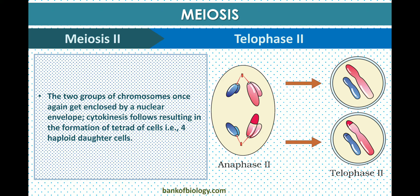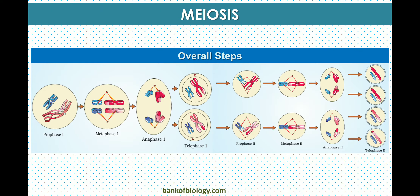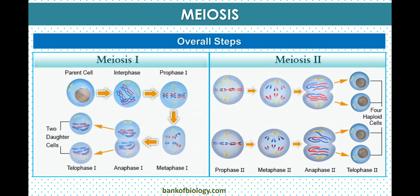In telophase two, the two groups of chromosomes become enclosed by the nuclear envelope. Cytokinesis follows, resulting in the formation of a tetrad — four haploid daughter cells. Overall, the complete sequence is prophase one, metaphase one, anaphase one, telophase one, then prophase two, metaphase two, anaphase two, and telophase two, producing four new daughter cells.